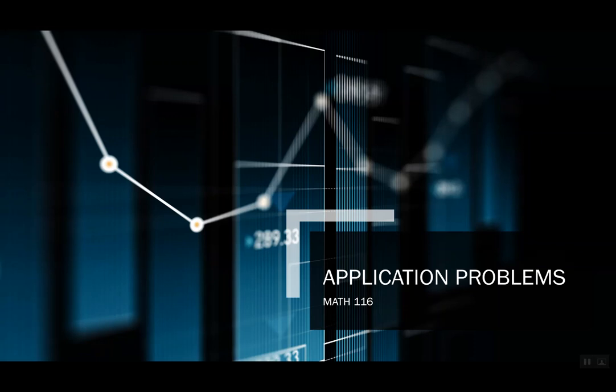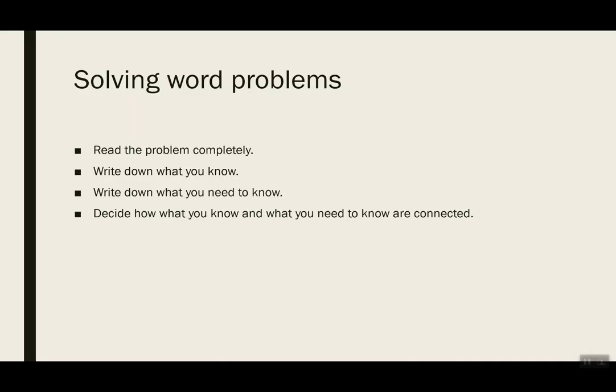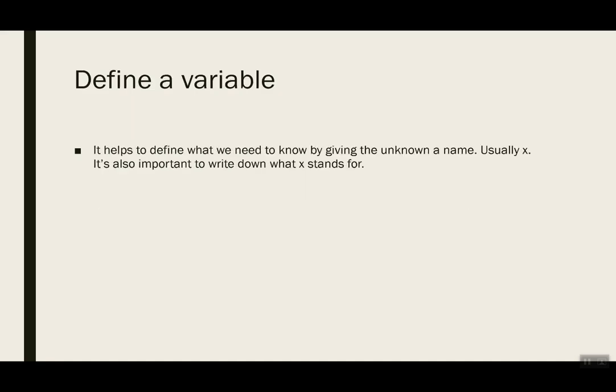Today we're going to tackle application problems, also known as word problems. When we're solving word problems, there are some things we want to remember. Number one, we should always read the problem completely before we try to start to solve it. We want to write down what we know, write down what we need to know, and then decide how what we know and what we need to know are connected. Define a variable — it helps to define what we need to know by giving the unknown a name, usually x. It's also important to write down what x stands for.